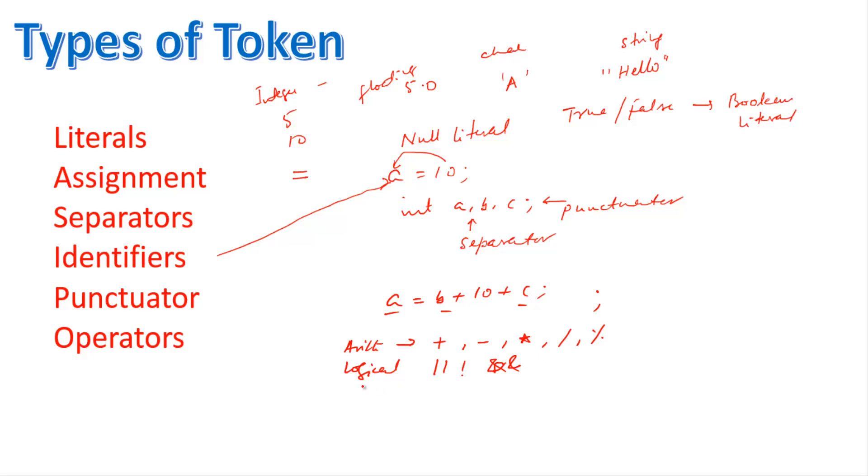What is logical operator? There is NOT, AND. Then there is relational operator. Relational operators are: greater than sign, less than sign, greater than equal to, less than equal to, equal to, not equal to. So these are operators.